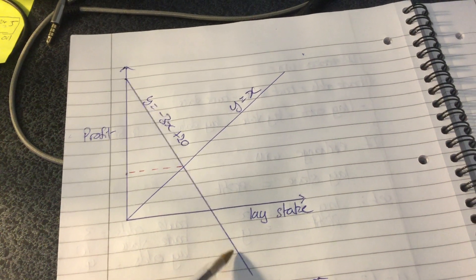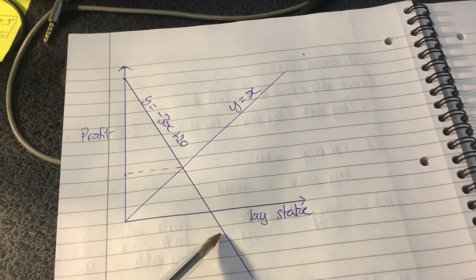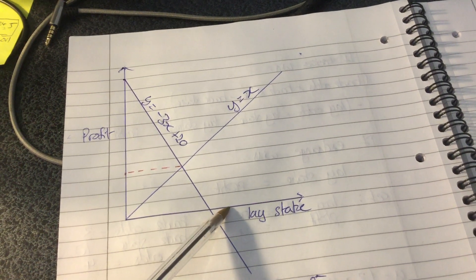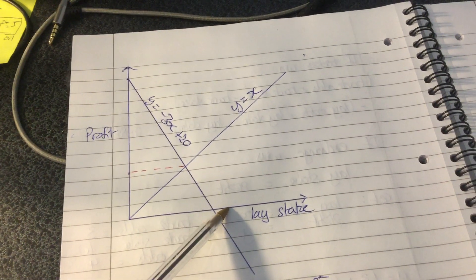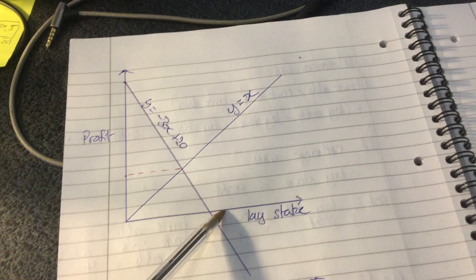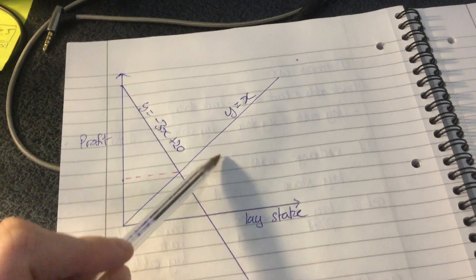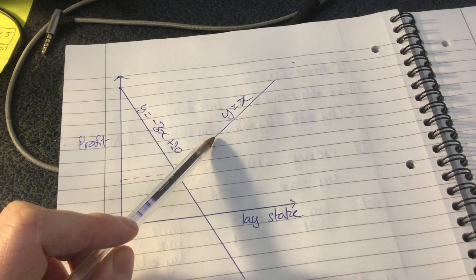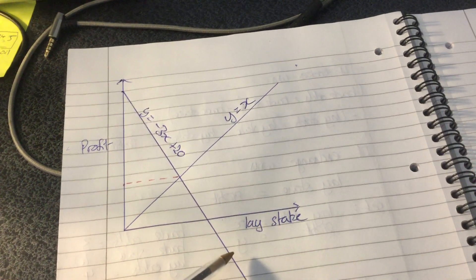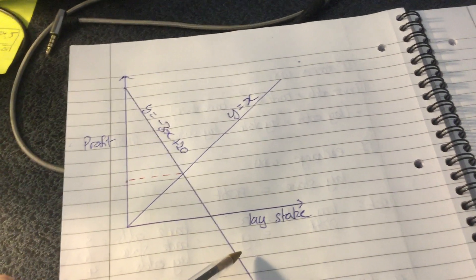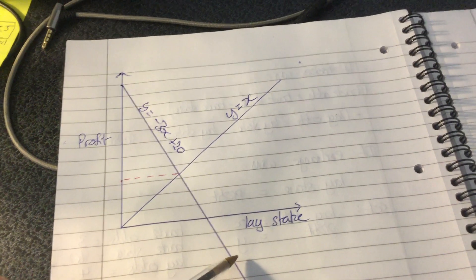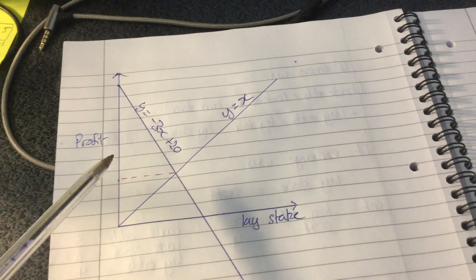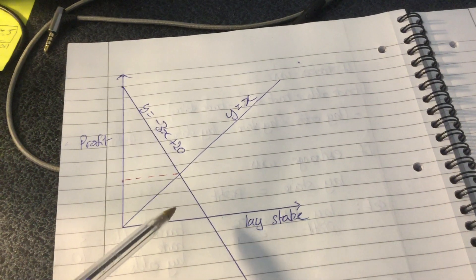If we were to put a lay stake on around say here, then two things could happen: we could win on the exchange and we get quite a big profit, but then this is just gambling because equally we could lose on the exchange and we'd make a loss overall. So what we want to do is find a way that the profit is the same regardless of what outcome happens.